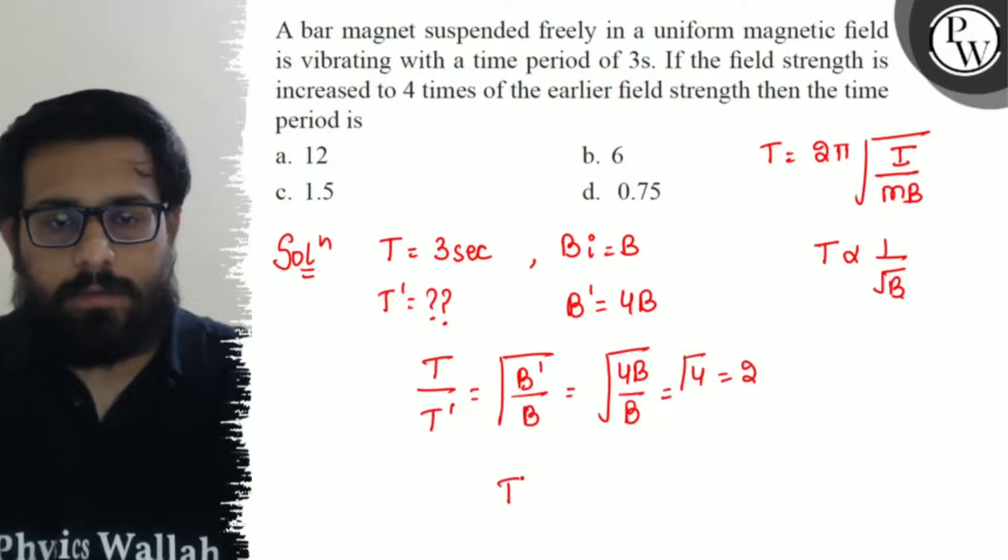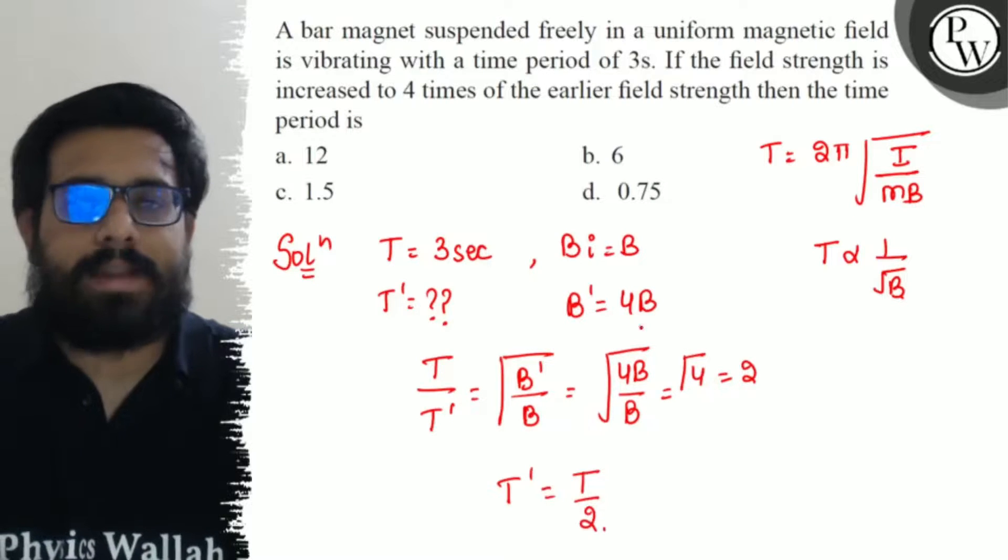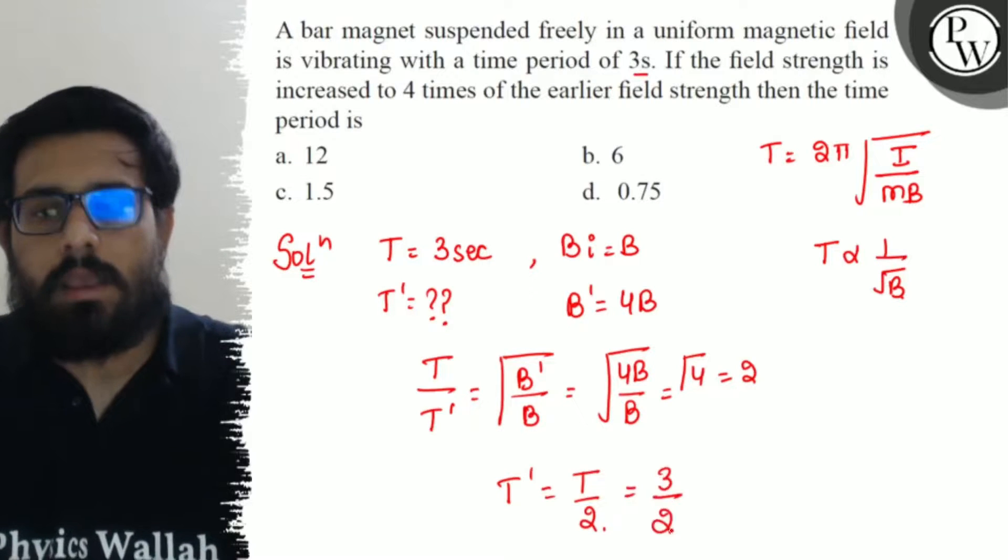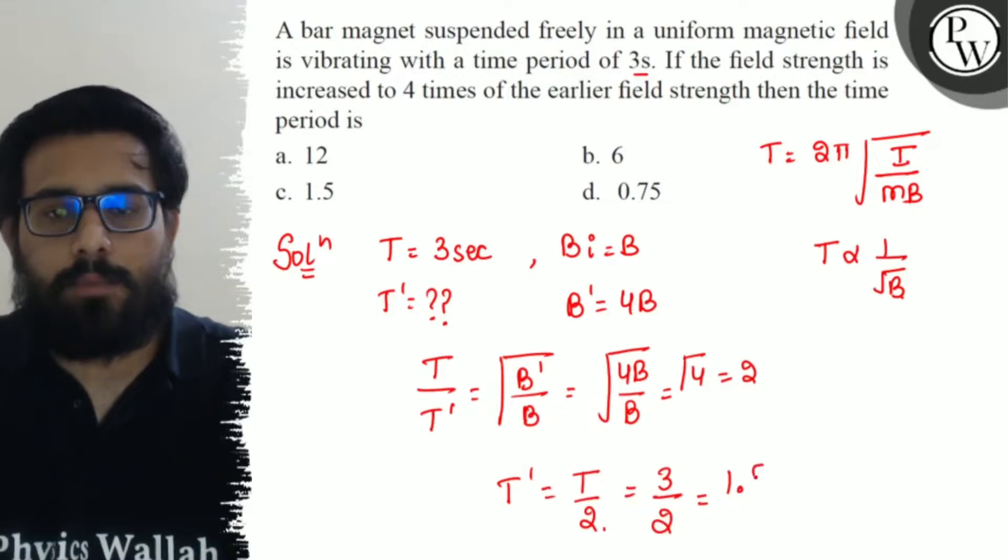So the value of T' comes out to be T by 2, which equals 3 by 2, and solving it we get 1.5 seconds.